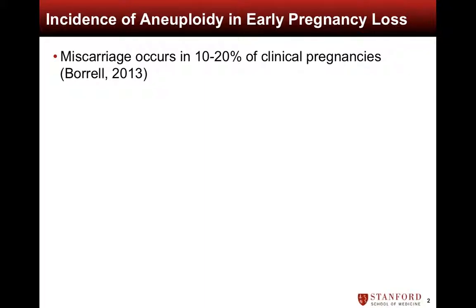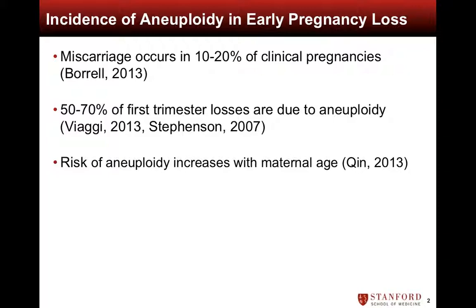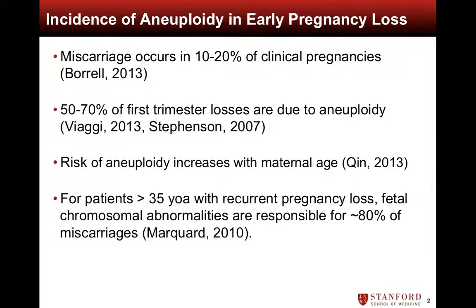Approximately 10-20% of all clinical pregnancies end in miscarriage. Large-scale studies have shown that 50-70% of first trimester losses are due to chromosomal abnormalities. Furthermore, the risk of aneuploidy increases with advancing maternal age and is therefore increasingly relevant in the infertile population. In the subset of patients greater than 35 years of age with recurrent pregnancy loss, fetal chromosomal abnormalities are responsible for up to 80% of miscarriages.